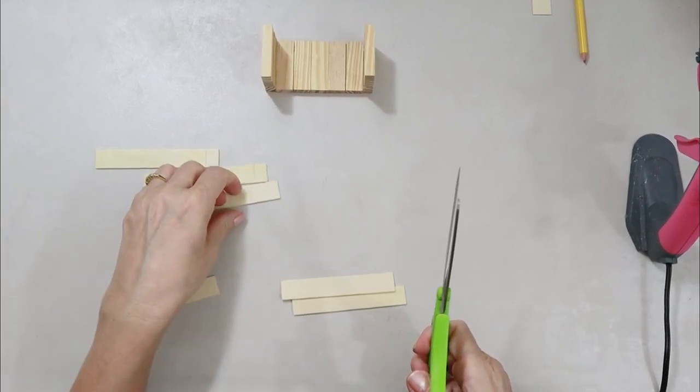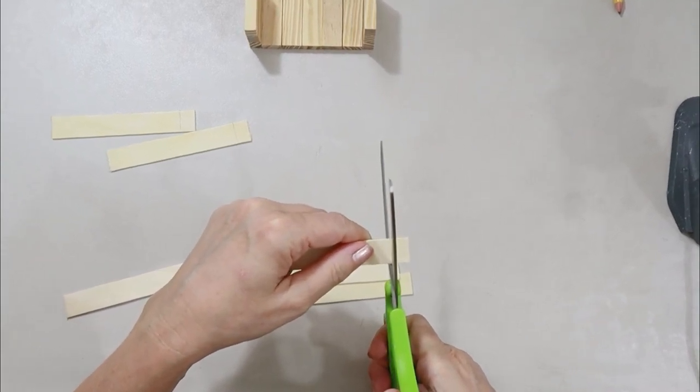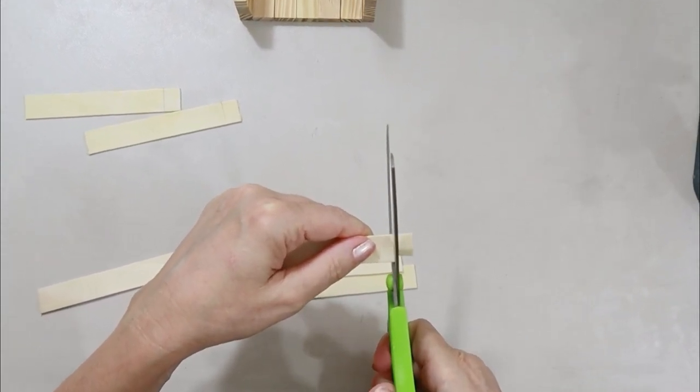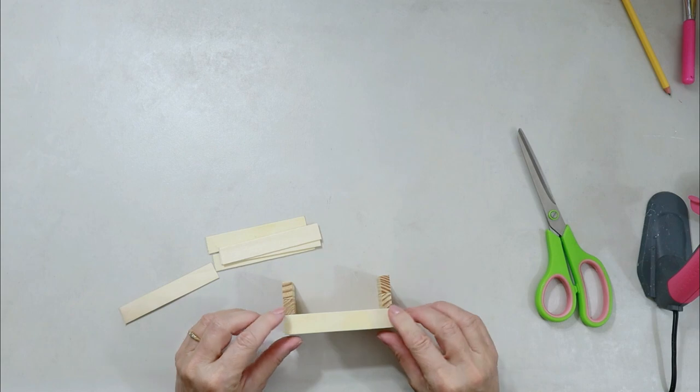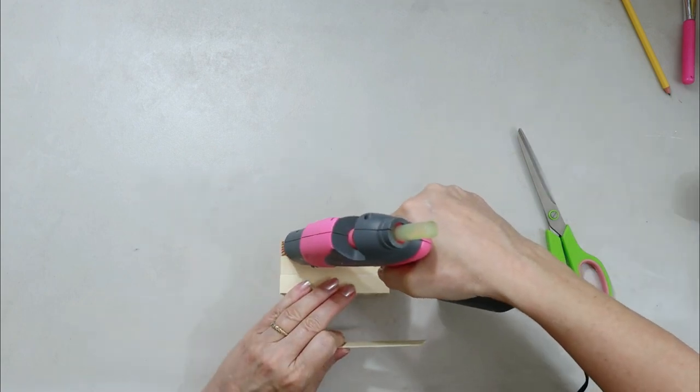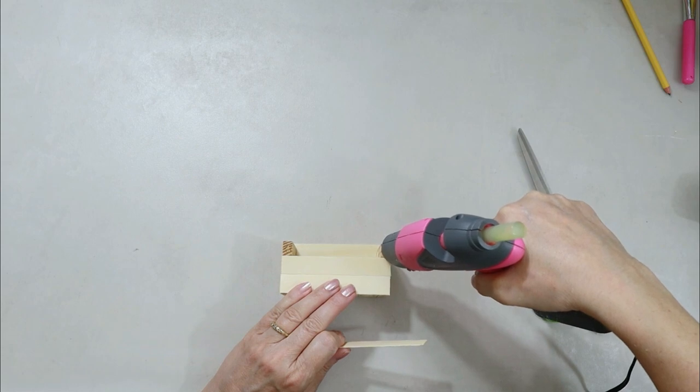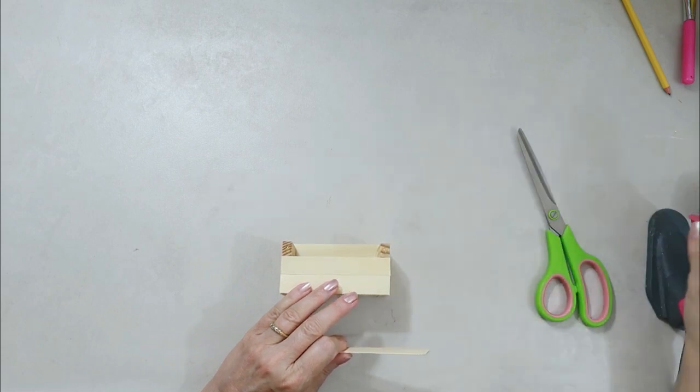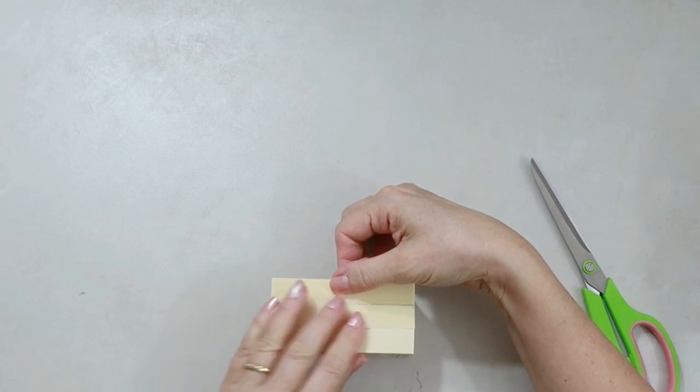Next, I'm going to measure and cut my craft sticks so that they fit on the side. We're making a little wooden wagon, you guys, just so you can envision what I'm trying to do here. And then I'm going to glue those sticks up along on either side, kind of like a wooden crate. So we're doing like a little crate wagon, I guess.